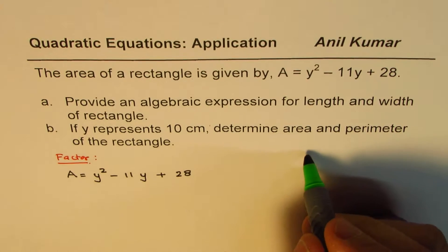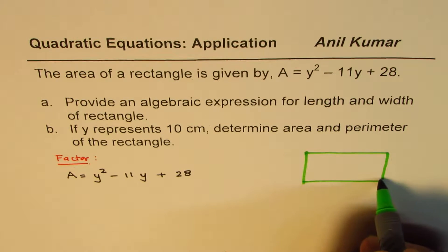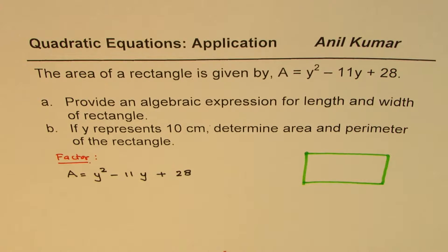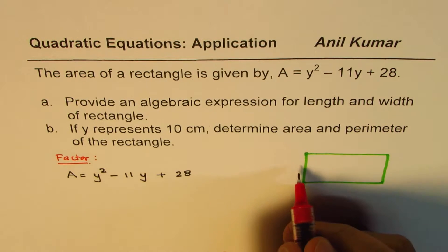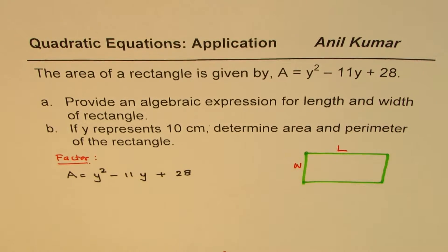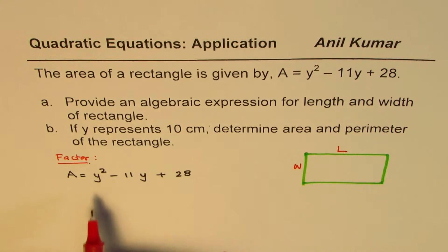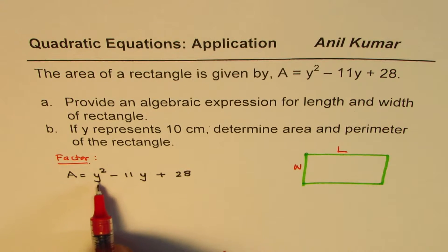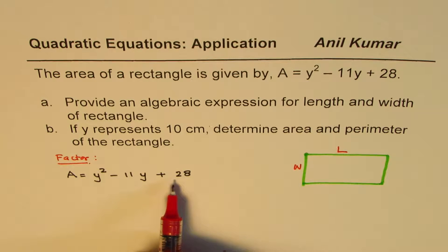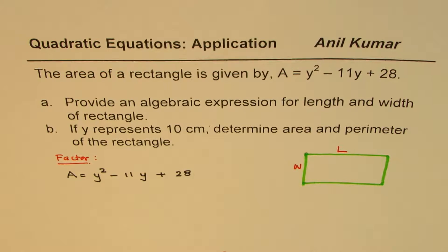So think like this. We have a rectangle here. Opposite sides are equal, they are perpendicular, they are parallel sides. Let's say L and width. L is the length, W is the width. Area is what? Product of these two. So if I could write this expression as product of two factors, then I can relate it with my length and width. That's the whole idea.